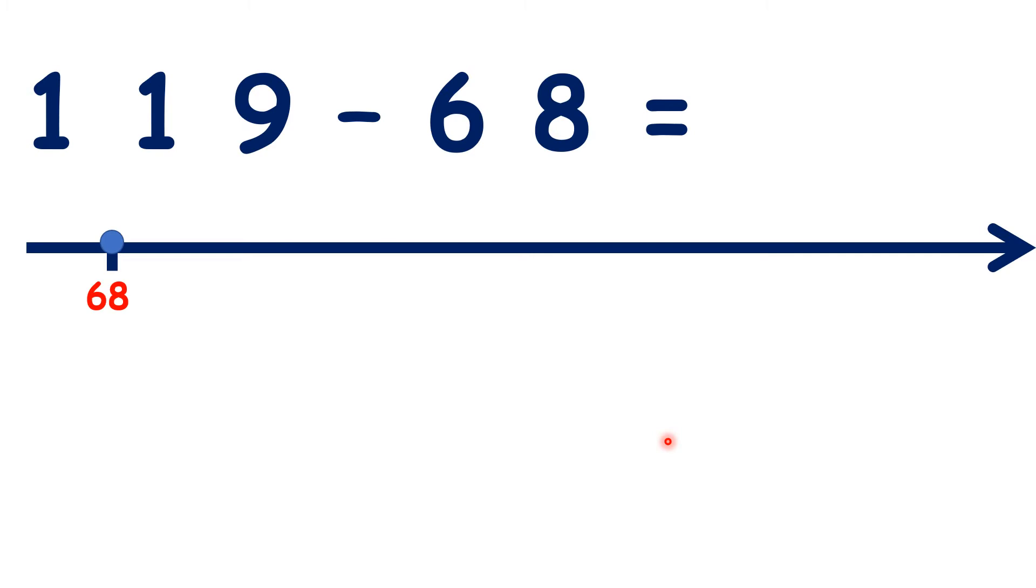So pause the video, and see if you can use the same method for 119 minus 68. From 68, we need 2 more to get to 70, to get to the next multiple of 10. Then, to get to 100 from 70, we need 30 more. And from 100, to get to 119, we need 19 more.